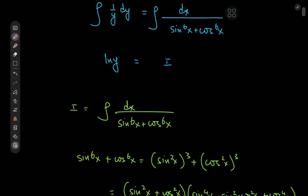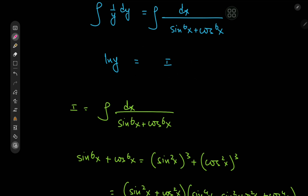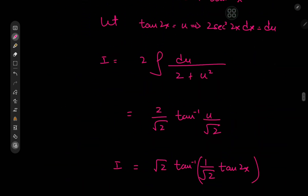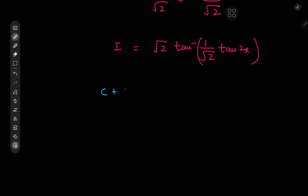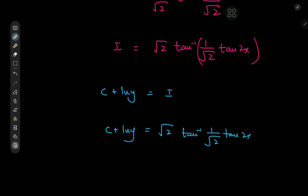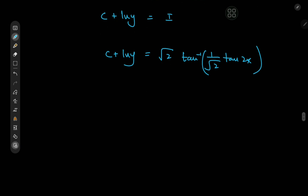Recalling our differential equation, we had log y = I, plus a constant of integration. Placing the constant on the left, we have c + log y = √2 · arctan(1/√2 · tan(2x)).